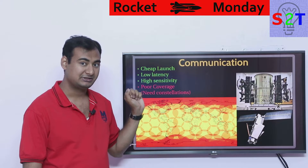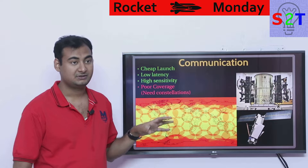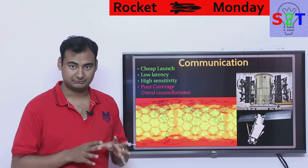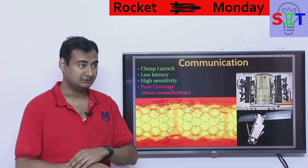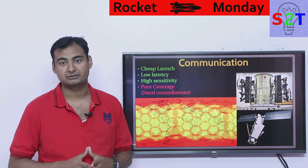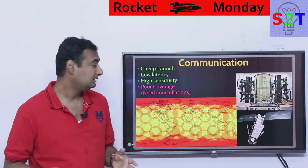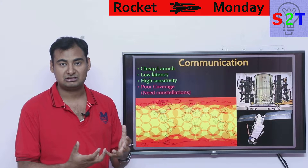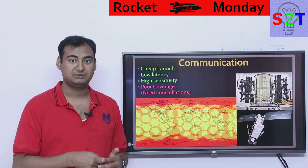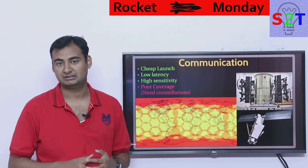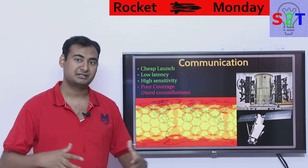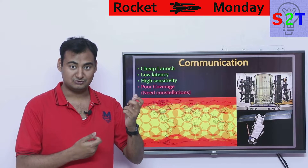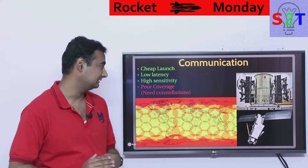LEO also has high sensitivity. To understand this, you need to understand the inverse square law. Because of that, we have very good communication — your mobile does not need 10 megawatts of power just to communicate to a satellite. It would need that if trying to reach geostationary, and your receiver antenna would need to be as big as a TV dish. So if you want to do that on a mobile phone, you have to be on a low earth orbit satellite.